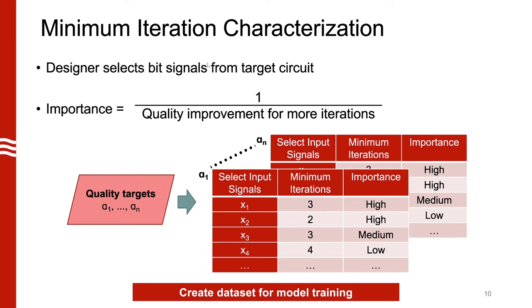Inputs that will improve a lot with more iterations have a very low importance. Similarly, inputs that don't improve much with more iterations have a very high importance. This importance concept will come into play during the power capping stage.